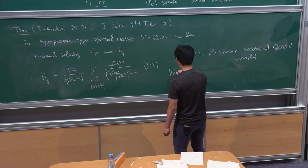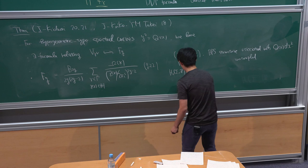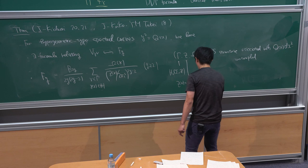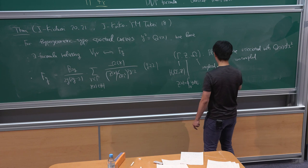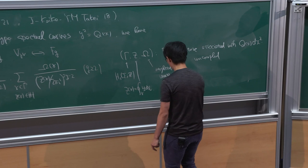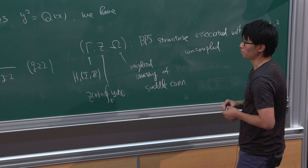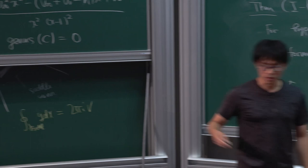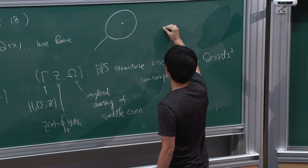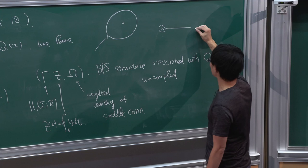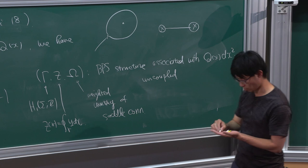If you consider rational functions, complicated Stokes graphs can appear. For example, around a double pole you sometimes have a certain degeneration, and from a simple pole one Stokes curve can go to another simple pole. This can happen in some members of the confluent hypergeometric family. The VPS structure is uncoupled here because the genus of the spectral curve is zero, so there is no nontrivial wall-crossing of the first kind.